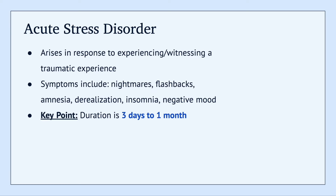The key point when it comes to diagnosing acute stress disorder is that the duration of symptoms is three days to one month. If it persists for any longer than that, it's no longer acute stress disorder and it actually becomes PTSD.